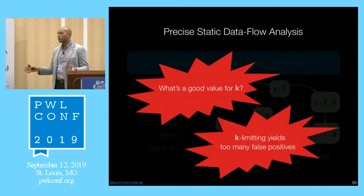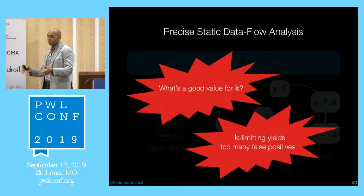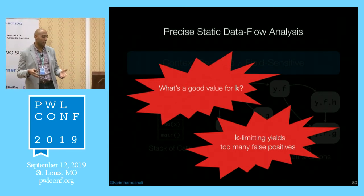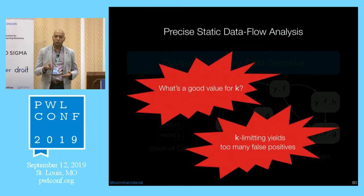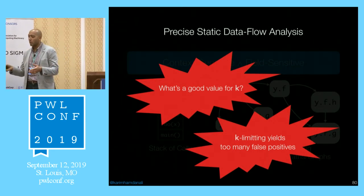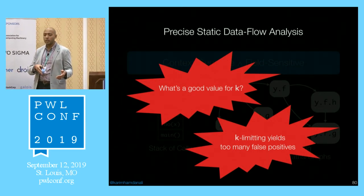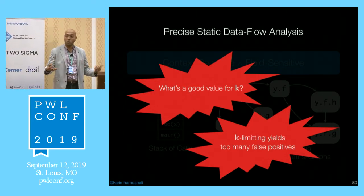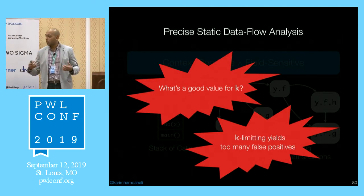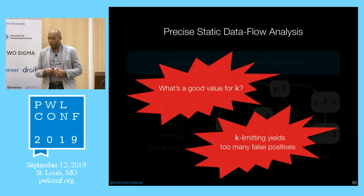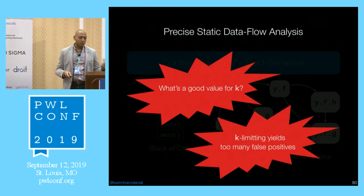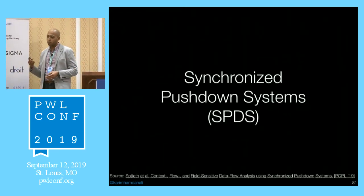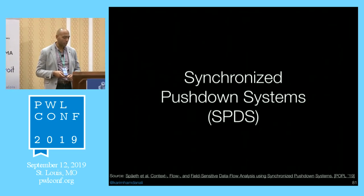If k is too low, you get too many false positives. If k is large enough for precision, the analysis won't scale to the codebase you're interested in. To overcome these two problems, we developed a new abstraction called Synchronized Pushdown System Automata, or SPDS for short.